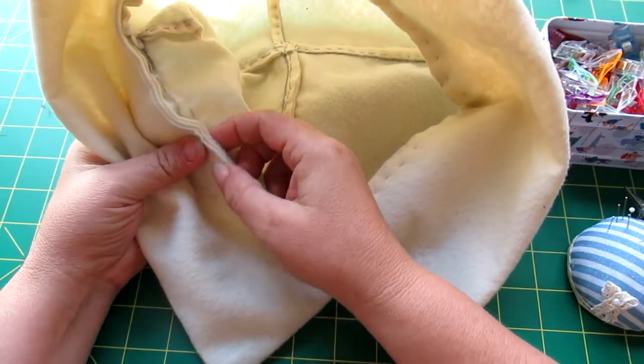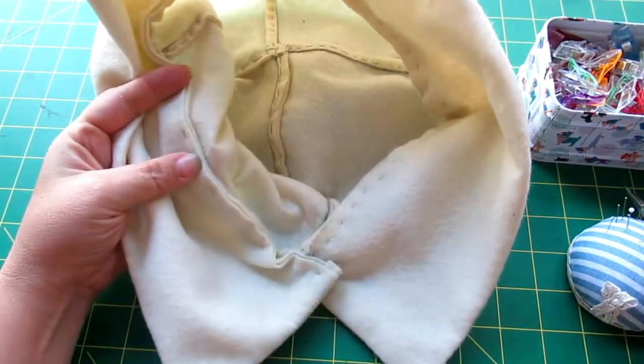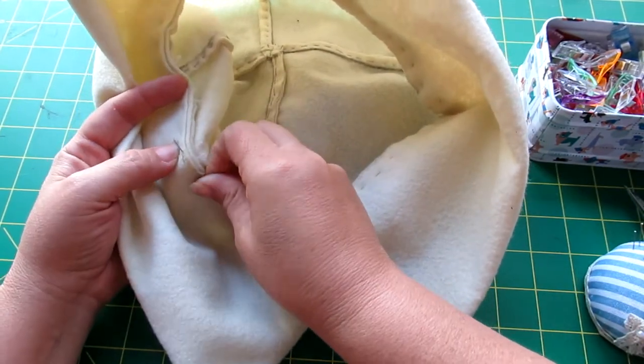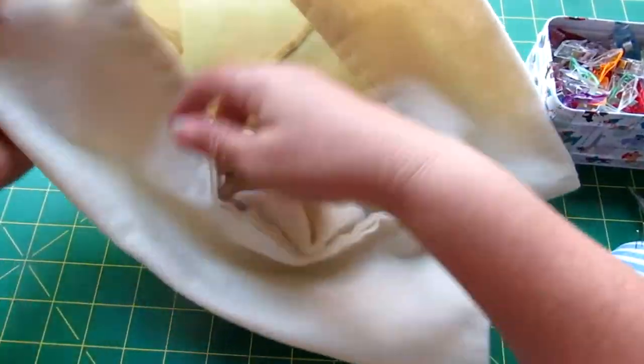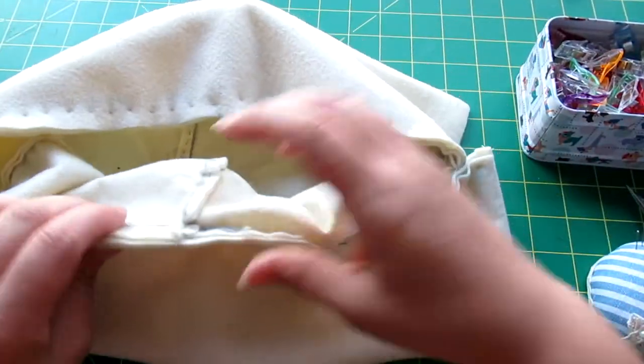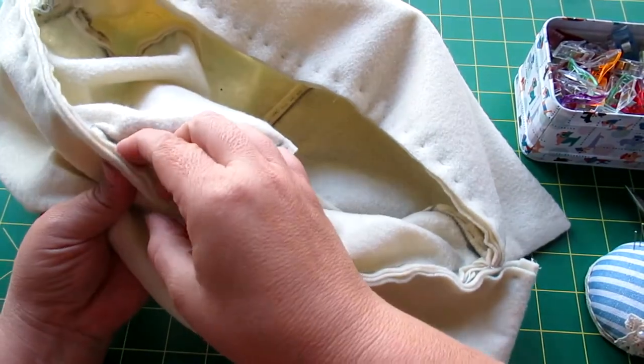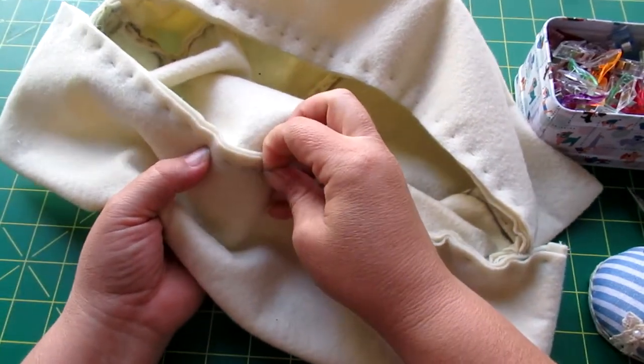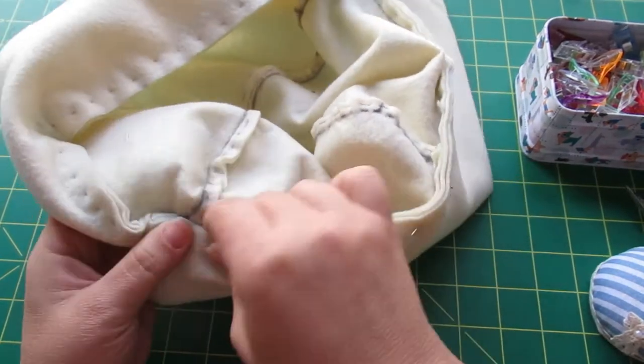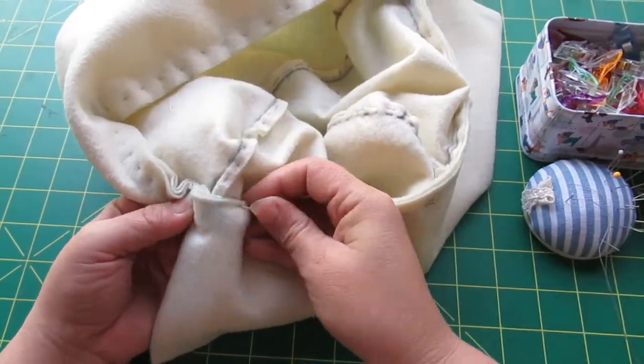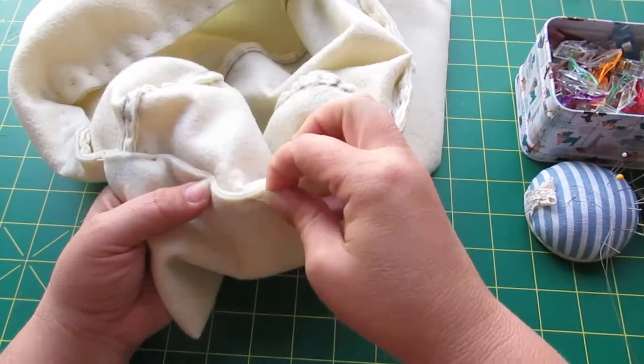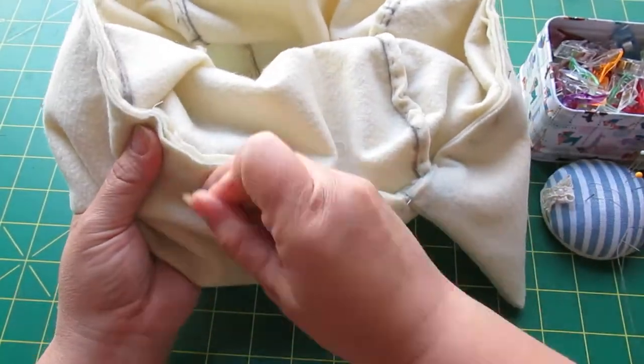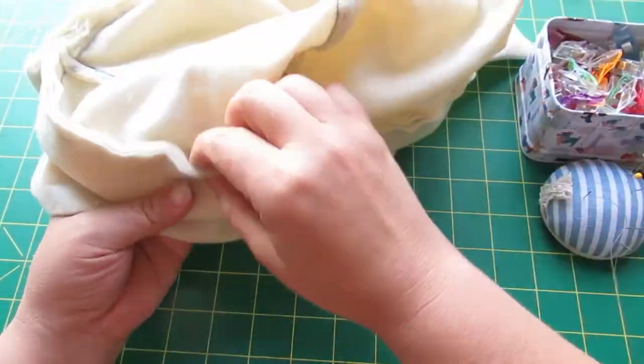I'm going to begin folding the seam allowances up on that fold line. Really important that you're pretty accurate here. Go in, look at where you've marked that fold line, and make sure you're folding directly on that. Then pin down your seam allowances. I like to use the pins parallel here because it keeps everything from moving and shifting because it's so very thick. Be very accurate, be very precise, and go all the way around.